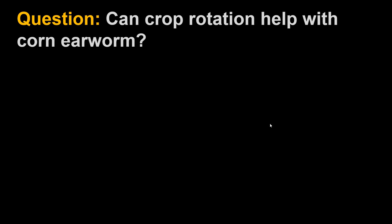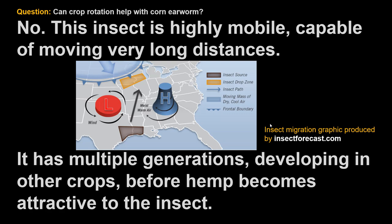Regarding management: can crop rotation help with corn earworm — can moving plants between fields from year to year help? Crop rotation does not work well with this insect because the corn earworm is a model for a highly mobile, highly dispersive species. In some parts of the country it doesn't survive winter in your field at all — it's blowing up from Kentucky or somewhere else.